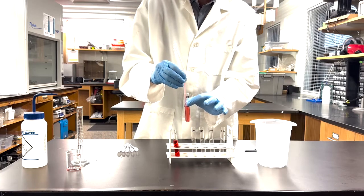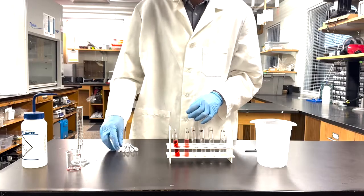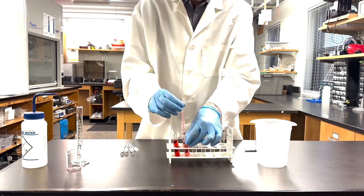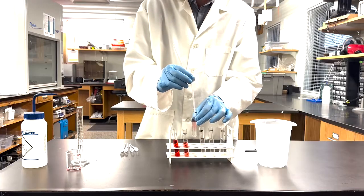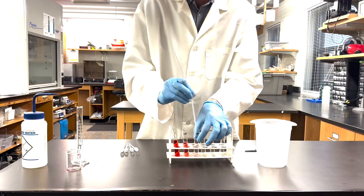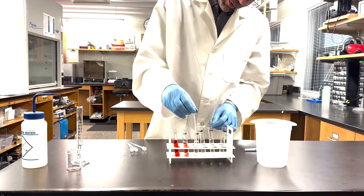When it is fully mixed, withdraw 1 mL from the 1 to 10 tube and add it to the 1 to 100 tube. Mix by pipetting up and down. Repeat this process until 1 mL has been added to each tube.